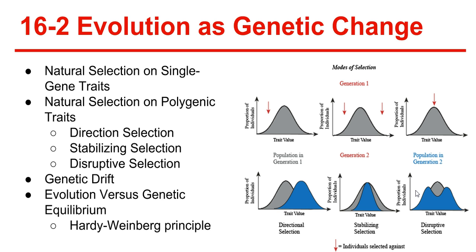16-2: Evolution as genetic change. Natural selection never acts directly on genes — it affects the entire organism, and that organism either survives and reproduces, or dies without reproducing. Natural selection on single gene traits can lead to changes in allele frequency, and thus to evolution. If the mutation is beneficial, the new organisms will survive and reproduce; if the mutation is detrimental, the new organisms will die.